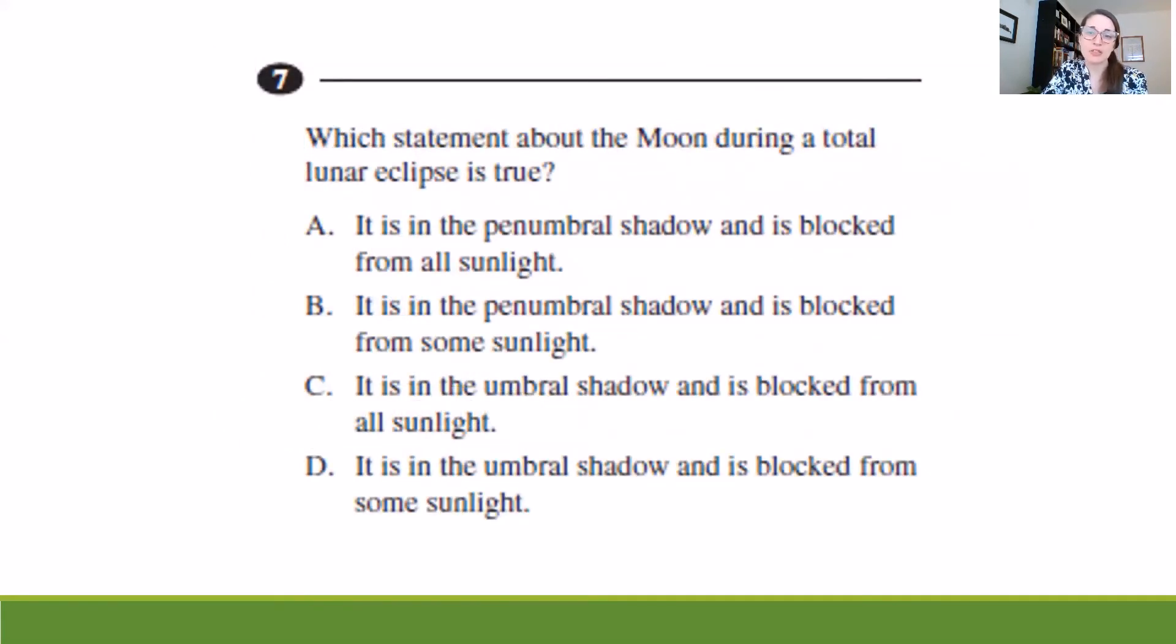Now for our next question, it says, which statement about the moon during a total eclipse is true. It is in the penumbral shadow and is blocked from all sunlight. It is in the penumbral shadow and is blocked from some sunlight. It is in the umbral shadow and is blocked from all sunlight. Or it is in the umbral shadow and is blocked from some sunlight. Now when I see those penumbral and umbral, I'm remembering that image because we saw those words listed on the image, the way it was drawn out. So I'm going to think about two things here because I'm seeing some part of the statement about where the moon is. Is it in the penumbral or the umbral shadow? And is it blocked from all or some sunlight during a total eclipse?